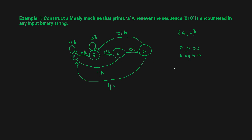Now let's try the string 0 0 1 0. Starting in state A: input 0 → go to B, output B. Then another 0 → stay in state B, output B. Then input 1 → go to state C, output B. In state C: input 0 → go to D, output A. Once we encounter 0 1 0, we get output A.